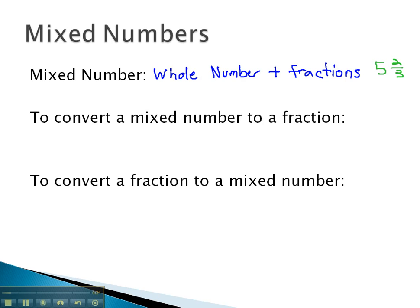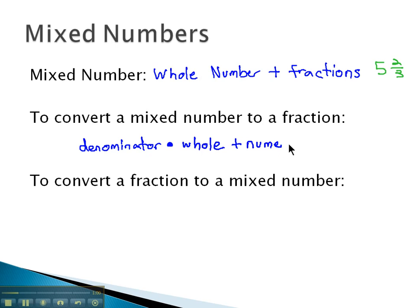Often with mixed numbers, it's useful to be able to convert back and forth between mixed numbers and fractions. To convert a mixed number to a fraction, what we will do is multiply the denominator times the whole number and add the numerator. This is going to equal the new numerator. So you might say the denominator times the whole number plus the old numerator.